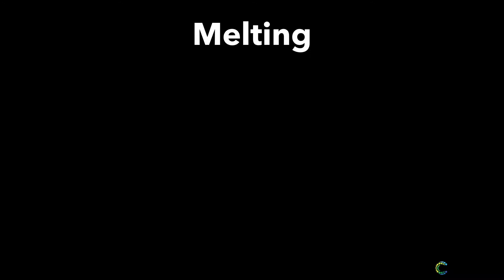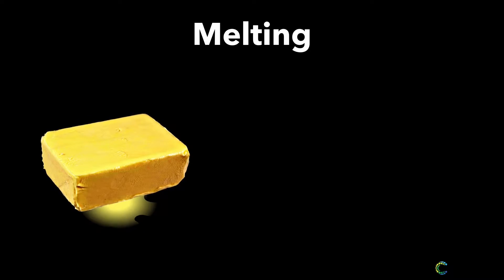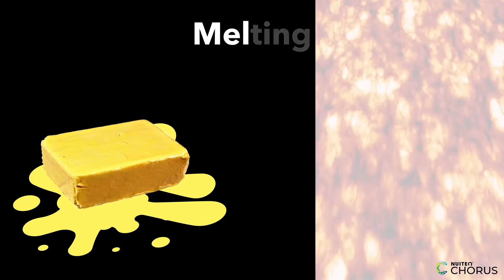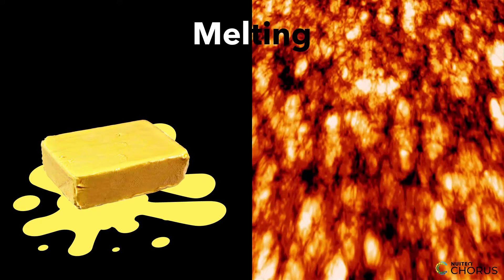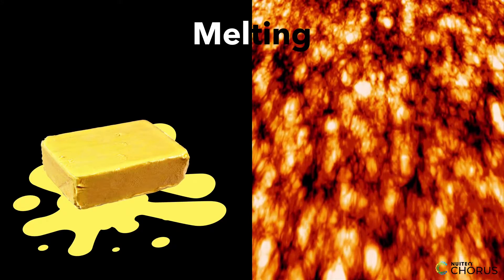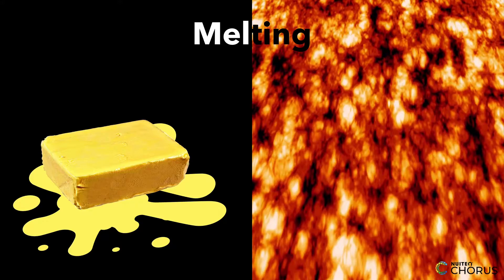One important process that happens in this earth kitchen is melting. Just like how you melt butter in a pan to make cookies, the earth melts certain materials to make new things. For example, when rocks near the earth's surface get hot enough, they can melt and form magma.